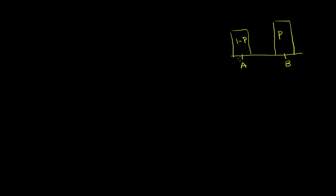You might already recognize that this is a Bernoulli distribution — there are one of two values for a sample I can get. The values I said: you're either voting for candidate A or you're voting for candidate B. It's hard to deal with those values mathematically, so we're going to say sampling someone voting for A is equivalent to sampling a 0, and sampling someone voting for B is equivalent to sampling a 1. With a Bernoulli distribution, the mean of this distribution is going to be equal to P.